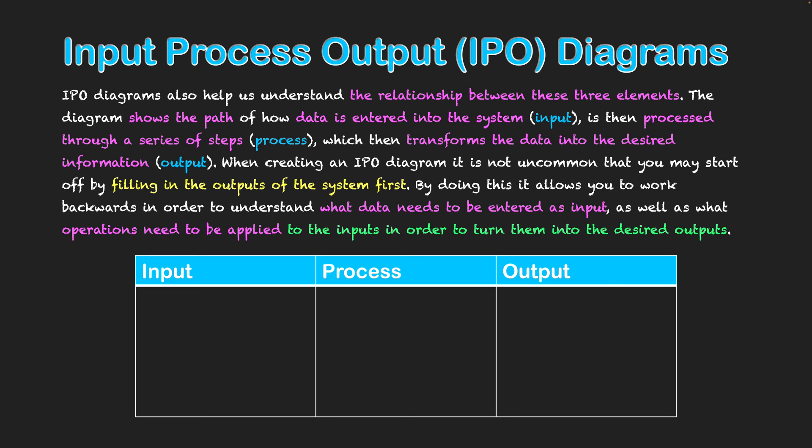It's not always the case, but sometimes it's beneficial to write the output first, because usually we want to know what information we're going for — what we want as our end product of our system or program. We might write the desired output first, then determine what inputs we need to reach that output, and then what processes will transform that input into the desired output. So we might want to start with the end result first and work our way backwards to figure out what inputs and processes are needed.